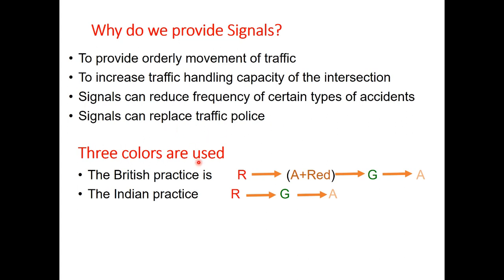Three colors are generally used. In British practice, the sequence is: red, then amber plus red together, then green, and then amber again. Whereas in Indian practice and American practice, the sequence is red, then green, and then amber. Here amber is shown only after termination of green, whereas in British practice amber is shown before and after the start of each phase.